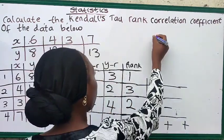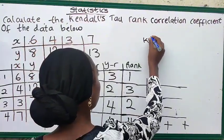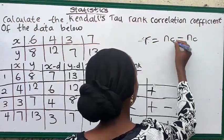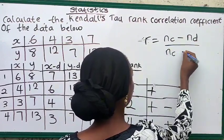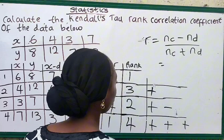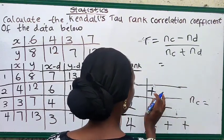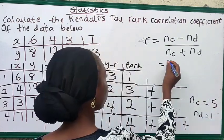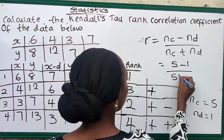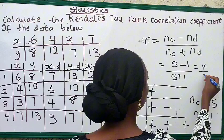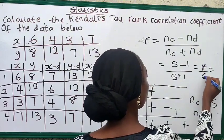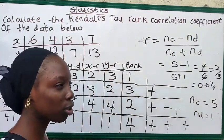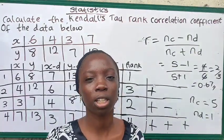So the formula for Kendall's Tau rank is what? It's number of concordants minus number of discordants divided by number of concordants plus number of discordants. So what's our number of concordants? Number of concordants is the plus: 1, 2, 3, 4, 5. It's 5. Our number of discordants is 1. So it will be 5 minus 1 divided by 5 plus 1, which is 4 divided by 6, 2 divided by 3 is 0.67. So this is the final answer for the Kendall's Tau rank correlation coefficient. Thank you.